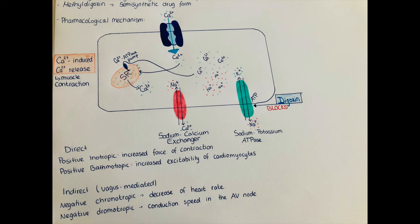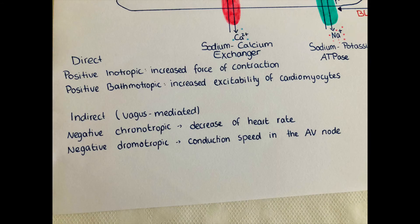This increase in calcium leads to the observed increase in inotropic effects. The heart rate is however also reduced due to the indirect increase in vagal tone. The direct effects of digoxin are positive inotropy — an increased force of contraction of the myocardial cells — and a positive bathmotropic effect, which is an increased excitability of the muscle cells. Indirectly, it stimulates the vagus nerve, which increases parasympathetic activity leading to a negative chronotropic effect and slows conduction within the AV node, giving it a negative dromotropic effect.